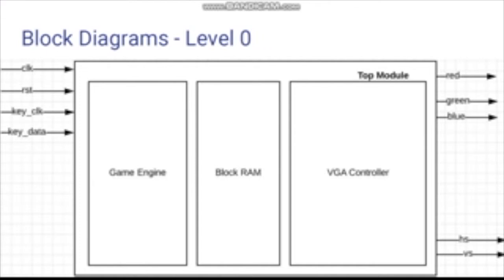Within our modules, we load in sprites from BlockRam and display them using a VGA controller. Our finite state machine is used to decide what to display on our screen. There are separate modes for the start of the game, the exploration part of the game, the game battles, and the end screens.